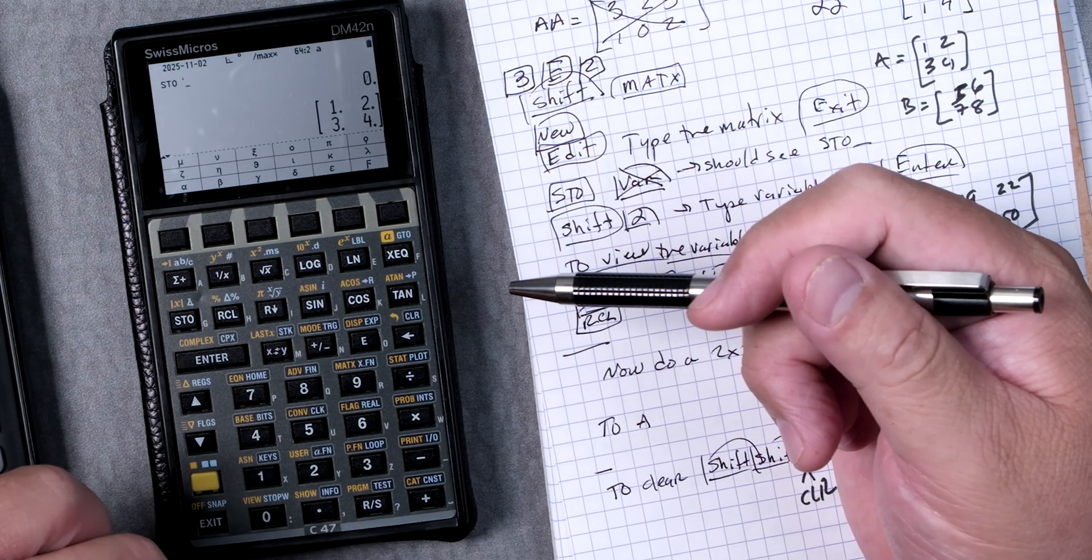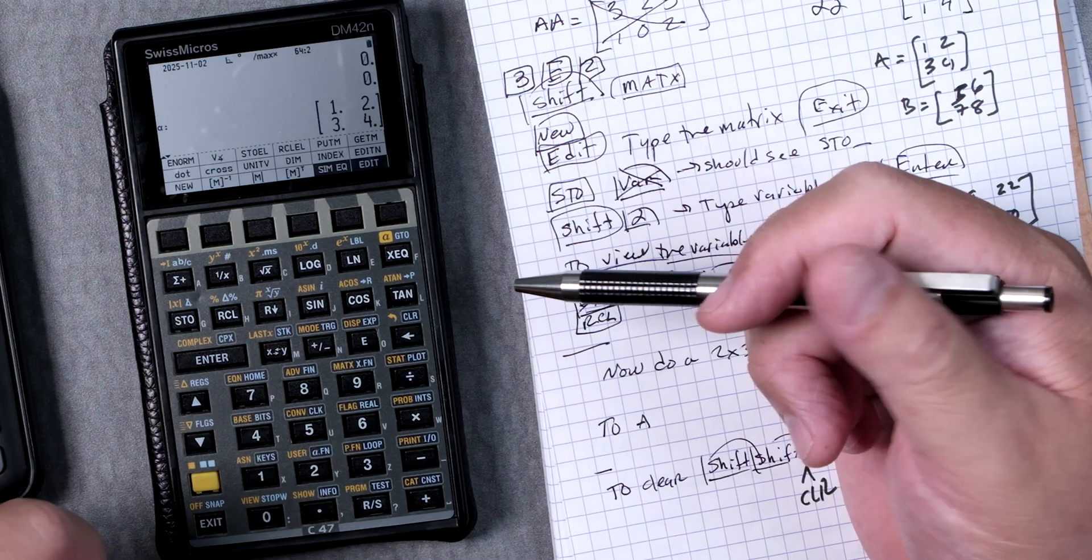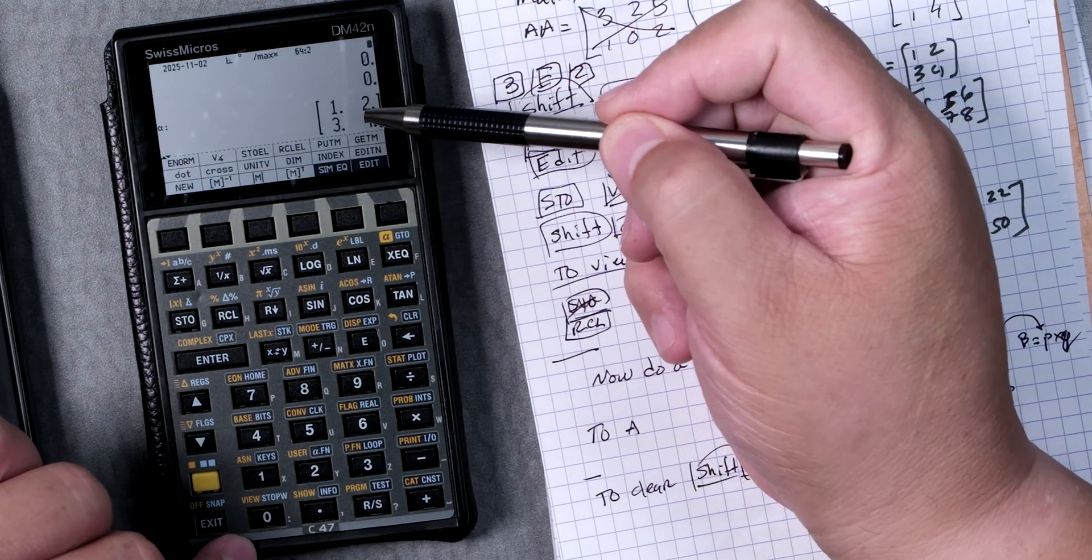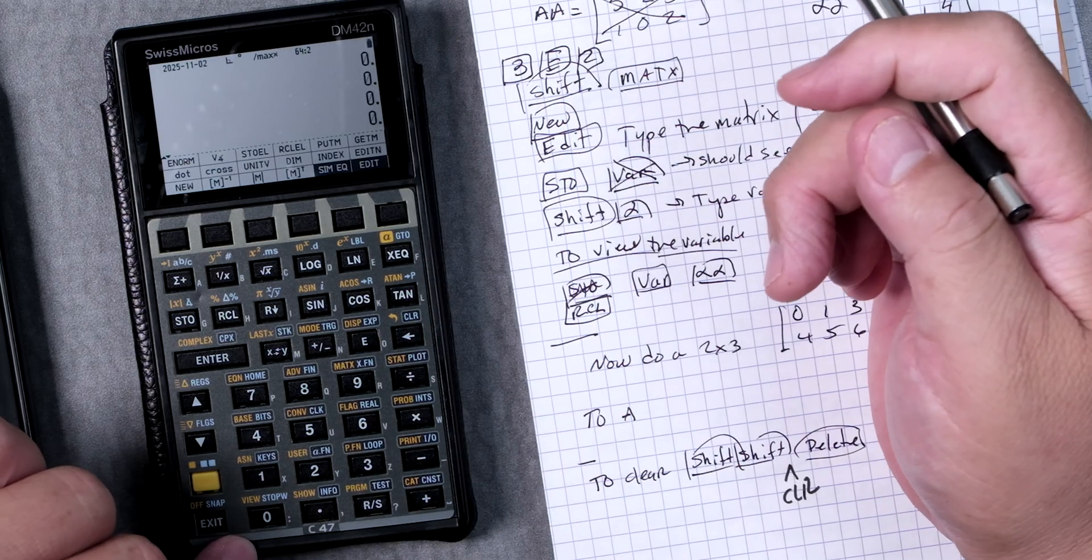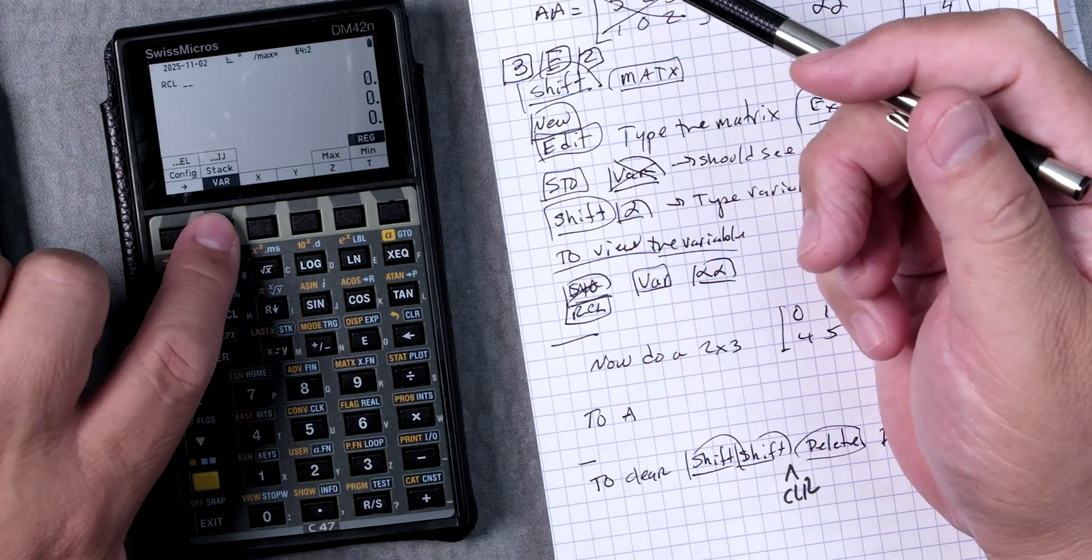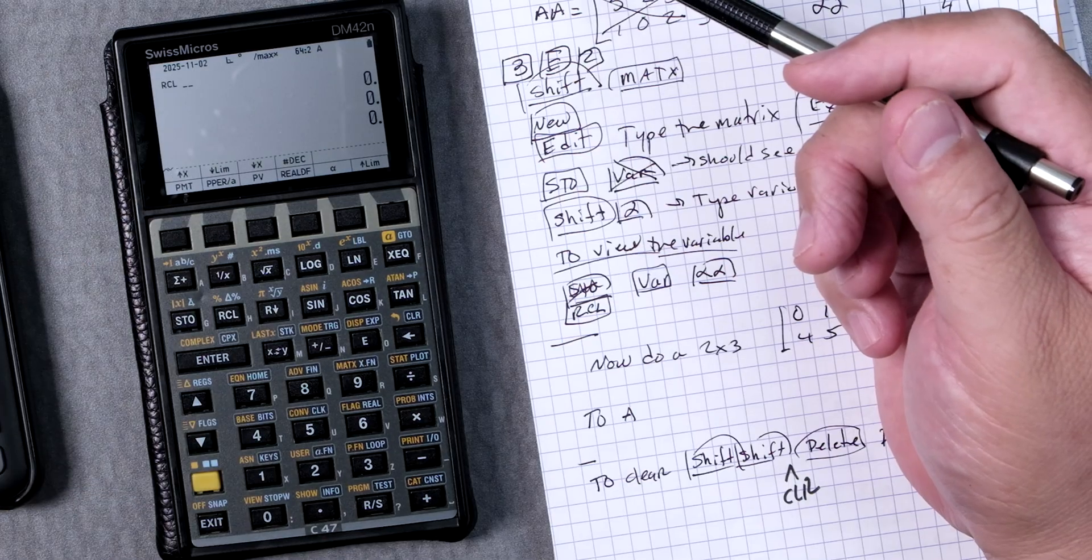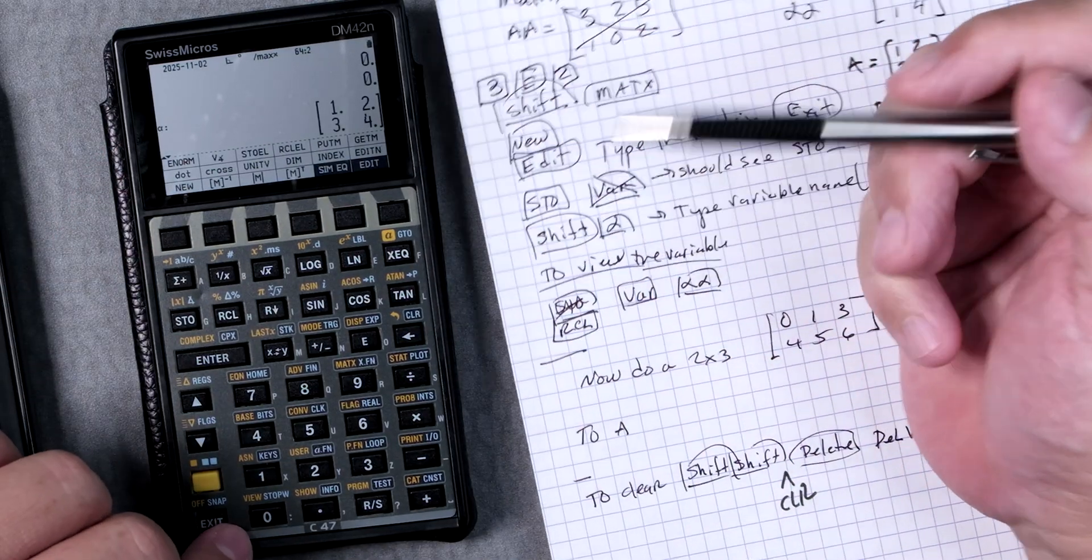Right here we have the alpha that's in yellow. Shift alpha and then you can click on one of these. These are the greek letters. I'm going to put alpha and then enter to store it. You can see that alpha is this matrix. Now you can delete this and bring it back by recall. Click on variable and here's alpha and alpha's back.